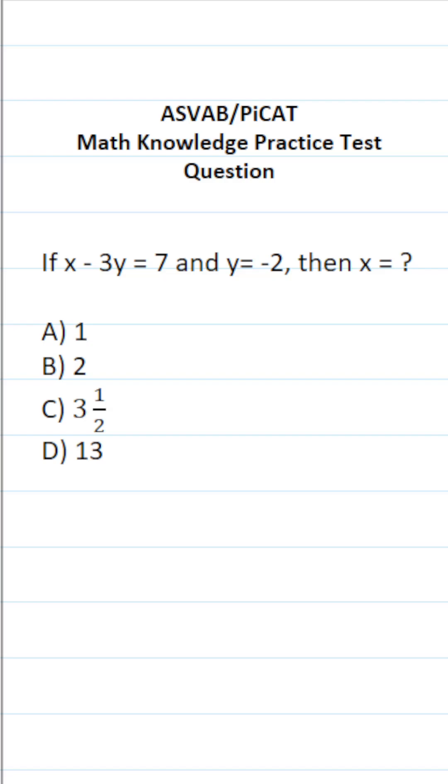This math knowledge practice test question for the ASVAB and PICAT says if x minus 3y equals 7 and y equals negative 2, then x equals.